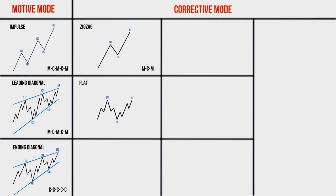The next pattern we will analyze is the flat. The flat, as well as the zigzag, consists of three waves denoted by the letters A, B, and C. Waves A and B of the flat are corrective and wave C is formed in the motive mode. Usually wave C takes the form of an impulse, but very rarely it is an ending diagonal. As a rule, the flat is a sideways correction, sometimes long.